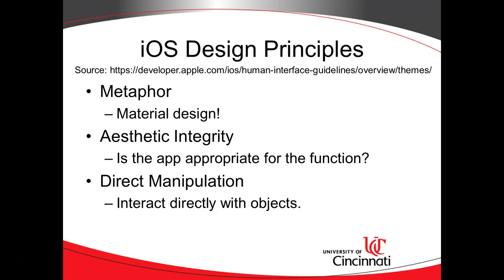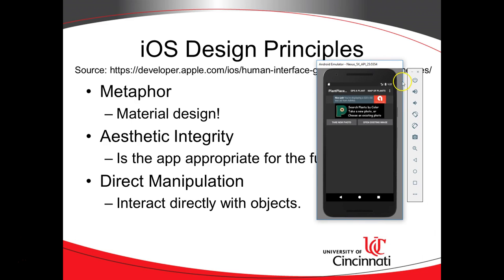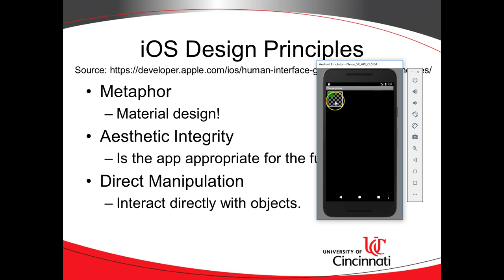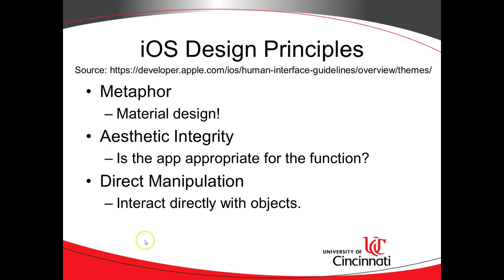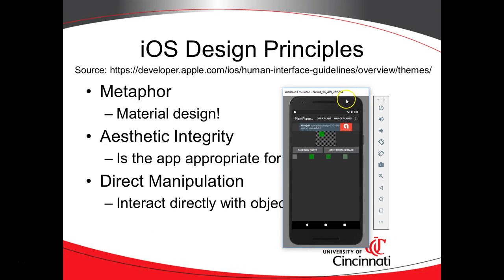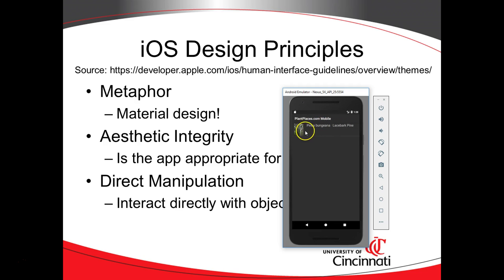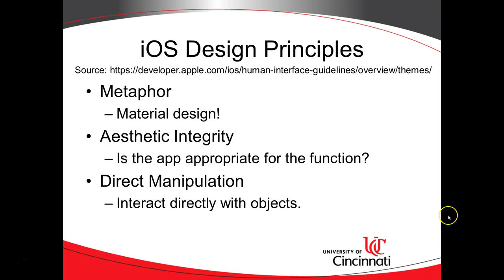Direct manipulation: we want to engage directly with objects in the application. Looking at the search-by-color screen — when you open an existing image it shows a gallery view of images already on your device so you can interact with them directly. When you open the image it shows up to 16 of the most frequent colors in that photo, and you can directly pick one to see matching plant names and photos. Direct manipulation means being able to touch those images directly.